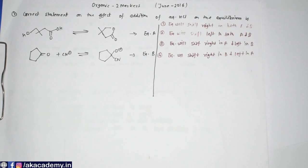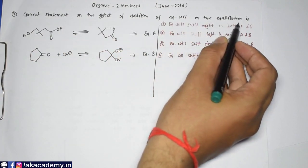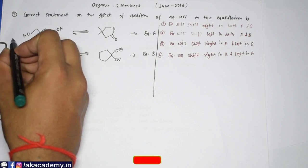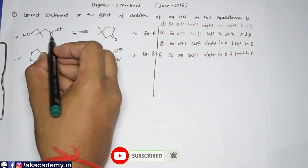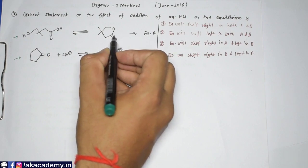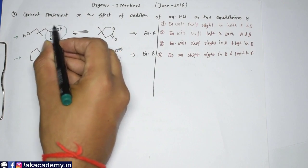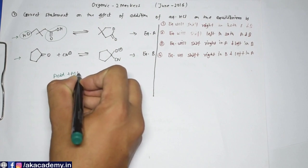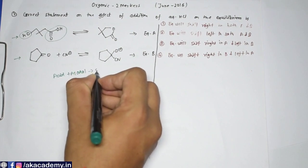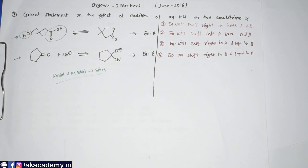Let's begin. The first question asks for the correct statement about the effect of adding aqueous HCl on an equilibrium. If you add HCl, you can see this is an acid and this is an alcohol — acid plus alcohol gives an ester, so esterification is taking place.